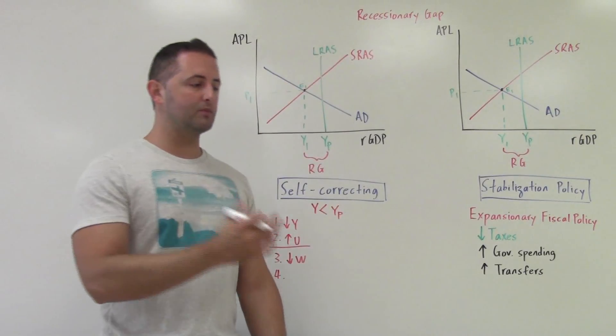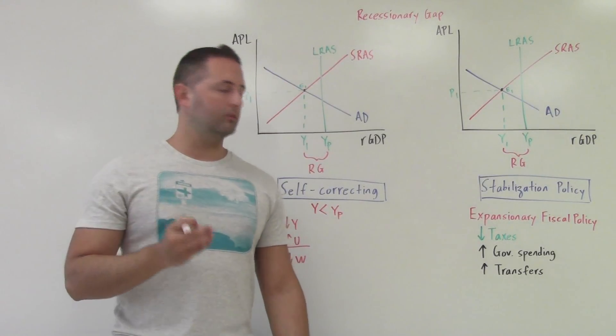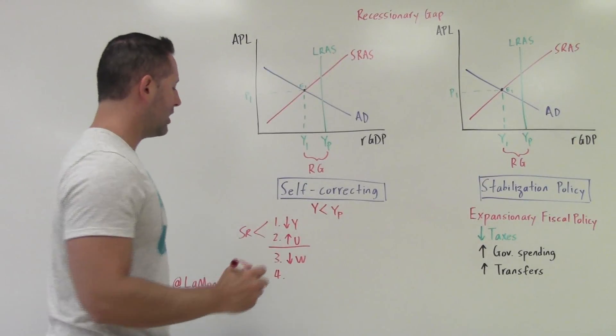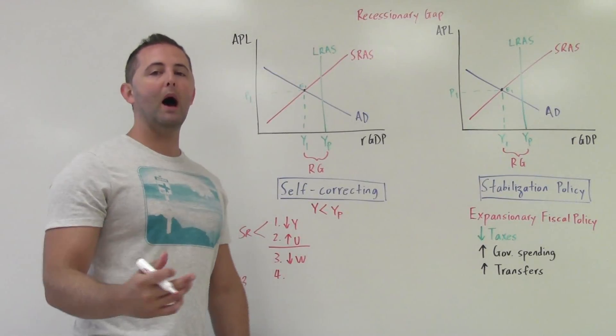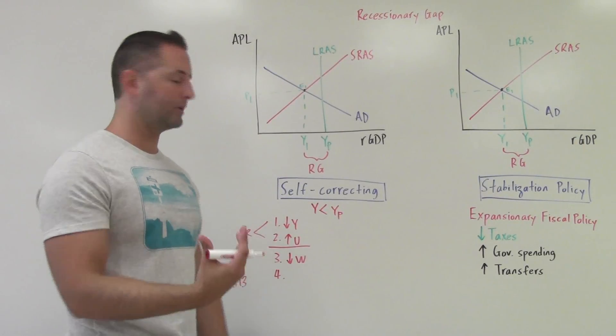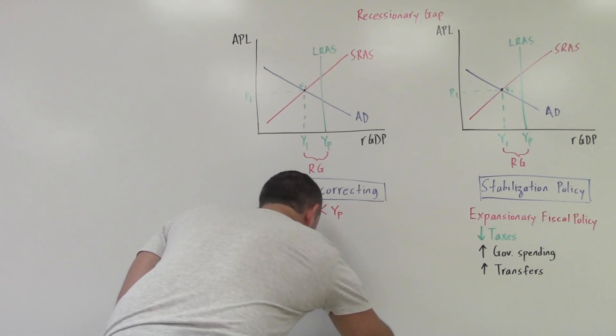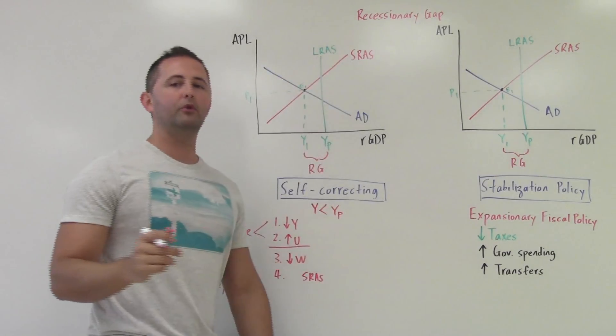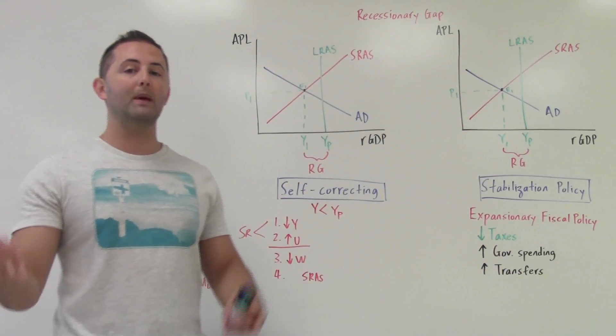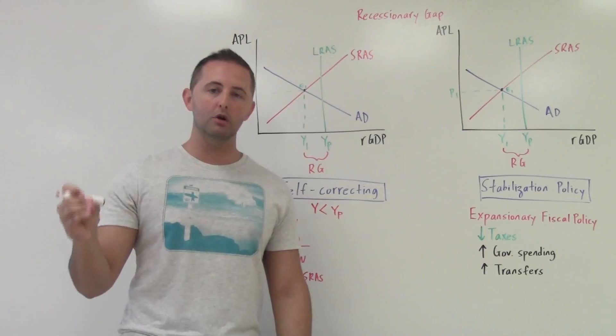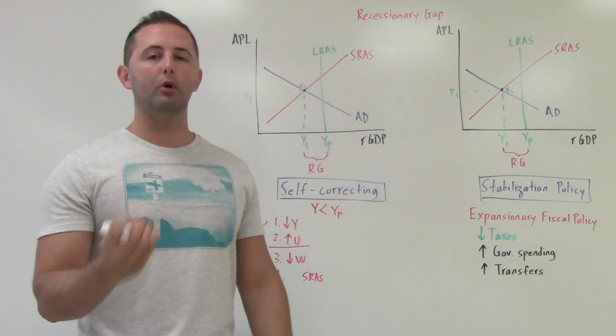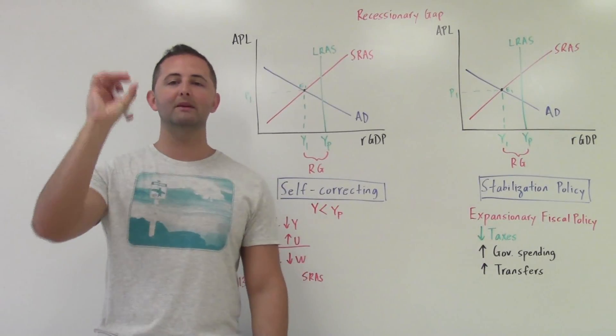That's going to cause suppliers and producers to be able to hire more workers to be more productive. Because wages have fallen, it is now cheaper for them to buy a worker. So instead of having to pay $12 an hour per worker, they only have to pay $10 an hour per worker. If they have that same exact budget of $1,200, before they could only hire 10 workers or 100 workers,